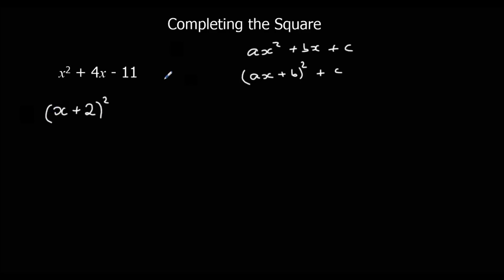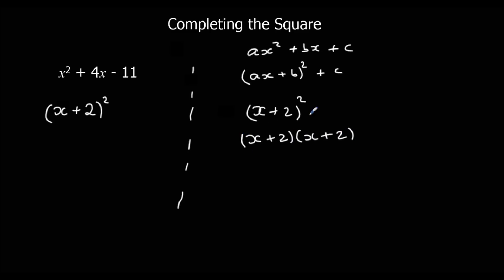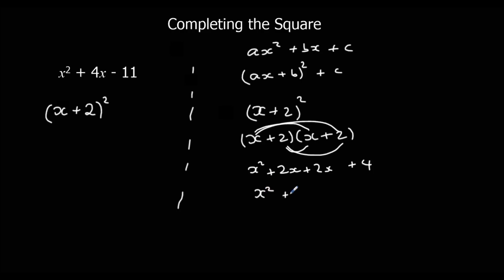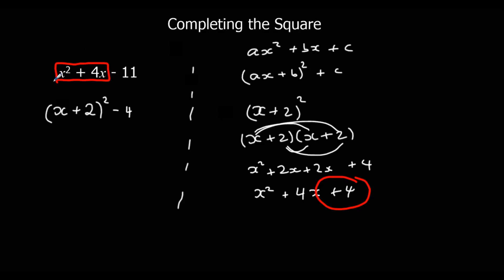Now let's look at what this means. x plus 2 squared means x plus 2 times x plus 2. If I expanded this, I'd get x squared plus 2x plus 2x plus 4, so x squared plus 4x plus 4. Now I wanted x squared plus 4x — I didn't want this plus 4. So what I'm going to do is take it away. To get rid of a plus 4, I'm going to do minus 4. So x squared plus 4x is the same as x plus 2 squared minus 4. And we've still got minus 11 on the end.